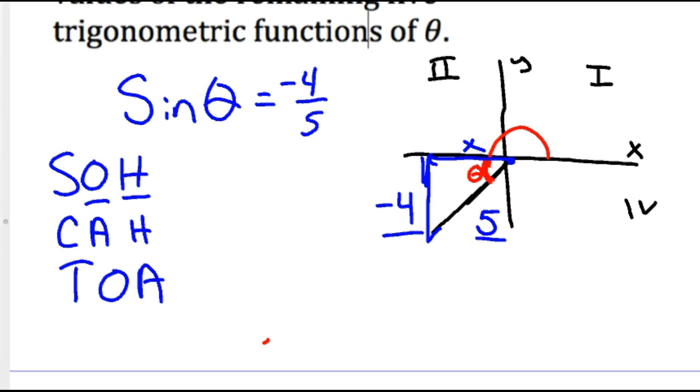And so we'll use Pythagorean theorem. And so negative four squared, which would be positive, plus X squared equals five squared. And so you solve that. This is 16 plus X squared equals 25. Many of you probably know this is a three, four, five right triangle.